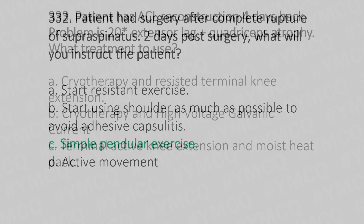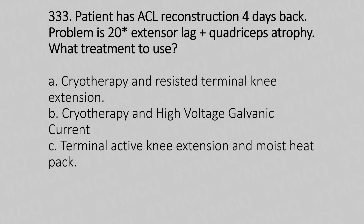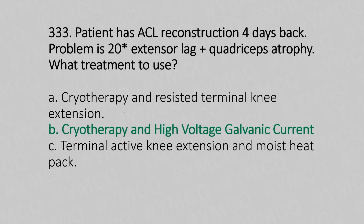Question number 333: A patient had ACL reconstruction four days back. The problem is a 20-degree extension lag plus quadriceps atrophy. What treatment to use? Option A: cryotherapy and resisted terminal knee extension. Option B: cryotherapy and high-voltage galvanic current. Option C: thermal active knee extension and moist heat pack. The answer is option B, cryotherapy and high-voltage galvanic current.